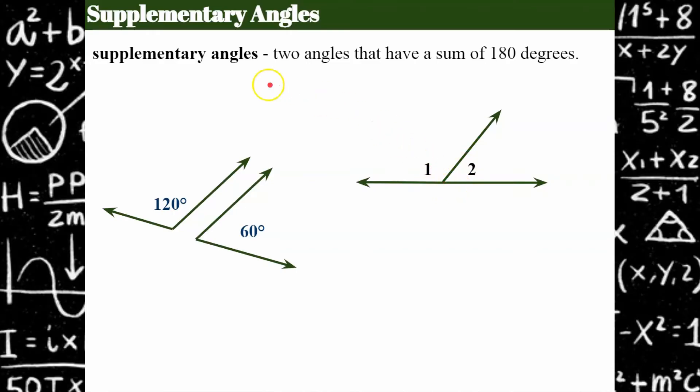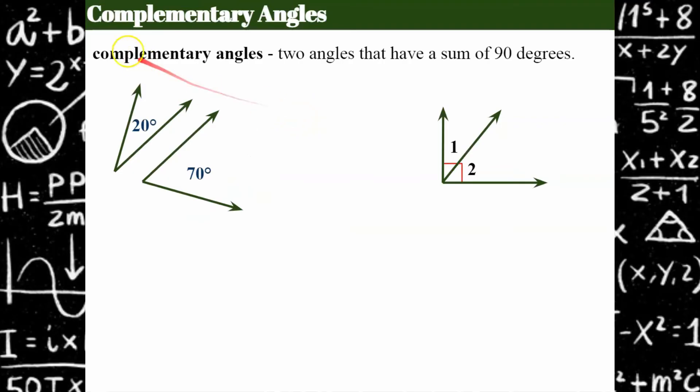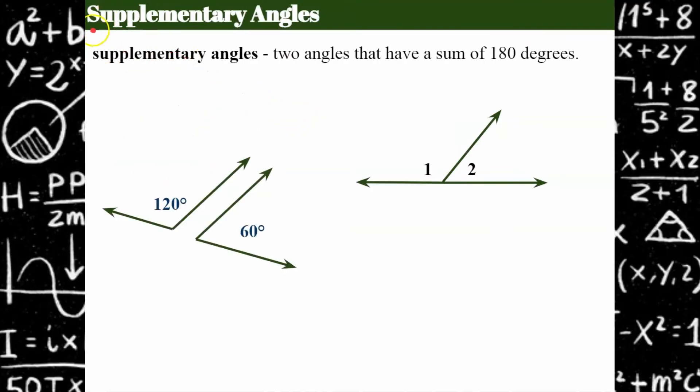How I like to have my students remember the difference between complementary and supplementary is that complementary angles start with C and come alphabetically before S. So complementary and supplementary, and if you can just remember 90 and 180, you know that complementary comes in the alphabet first. So that's 90 and supplementary are larger with 180.